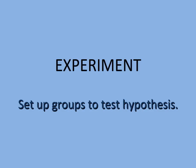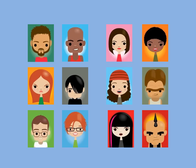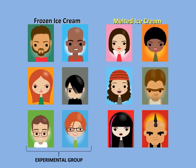Now we are finally ready to set up our experiment. Here are our test subjects. Let's randomly divide them into two groups. These subjects get frozen ice cream — they are called the experimental group, as they are testing our hypothesis based on the temperature of the ice cream. The other group gets melted ice cream — they are called the control group, as they are not testing for the hypothesis, but to make sure that no other factor is affecting our results.